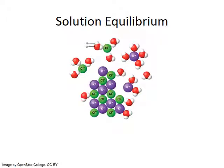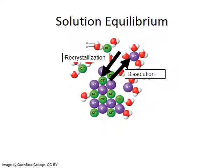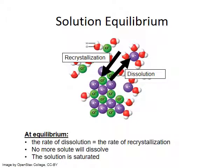A saturated solution represents a dynamic equilibrium between two opposing processes: dissolution and recrystallization. Consider dissolving an ionic compound like potassium chloride in a beaker of water. Initially, dissolving predominates and the dissociated ions of potassium and chloride spread throughout the water. As more ions go into solution, they may approach each other again and begin to recrystallize. Because the rate of dissolving is faster initially, the compound will likely continue to dissolve. However, as more ions dissolve, the rate of recrystallization increases. When the rate of recrystallization equals the rate of dissolution, the compound no longer dissolves — the solution is saturated and dynamic equilibrium has been reached.